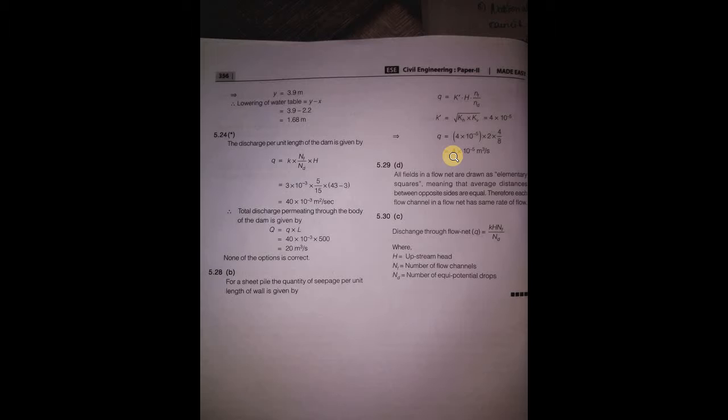K dash is the root of kh times kv. nf by nd equals niku. K equals q equals k times kh times nf by nd.